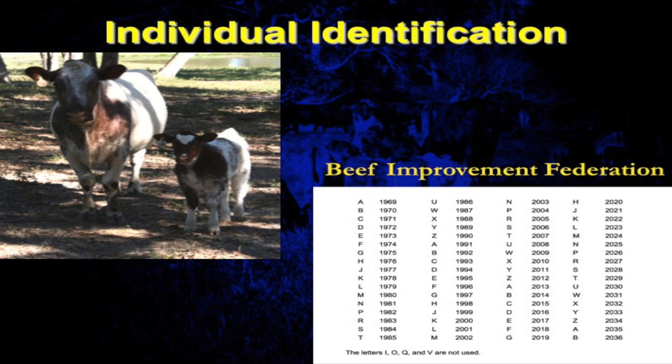Some breeders, especially on the purebred side, will use a letter-of-the-year numbering system. According to the Beef Improvement Federation, the letter H corresponds to 2020, and F corresponds to 2018. So an animal numbered 112F was born in 2018. The Beef Improvement Federation is a group of purebred and commercial producers with the goal of improving cattle production through genetic improvement, and they have standards for these year codes as well as various calculations.